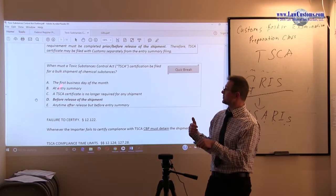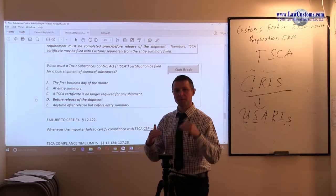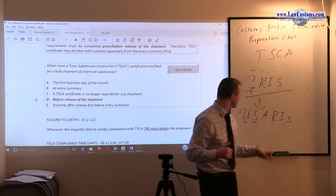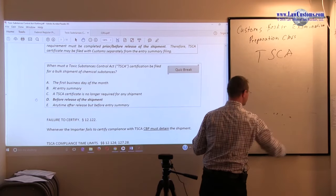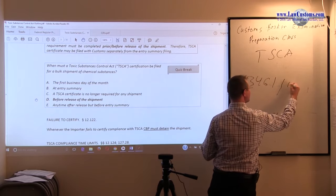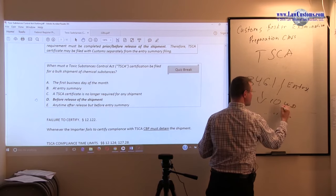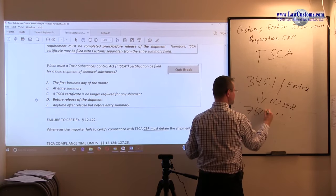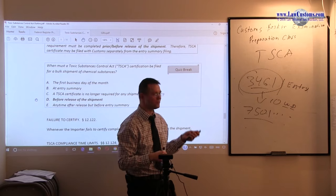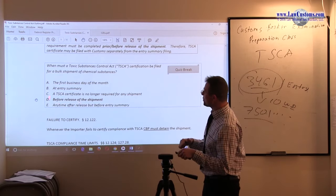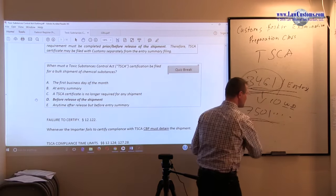And then the entry summary—well, the release of the shipment and entry summary do not have to happen at the same time. Recall that you can file an entry using the form 3461 entry, then 10 working days, 7501 for entry summary. The release can happen at this stage once you file 3461. Before release of the shipment must be filed. That means that the certification must be filed at this level, not at this level.